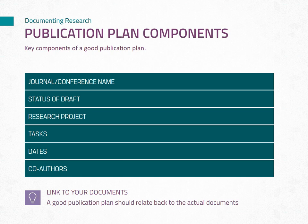Co-authors — identify co-authors for each draft. This is crucial for acknowledging and crediting the contributions of your colleagues and collaborators. By including these elements in your publication plan, you will have a clear roadmap to guide your writing process, keep track of deadlines, and collaborate effectively with co-authors. Remember, staying organized and proactive in your publication endeavors will contribute to your success as a researcher.